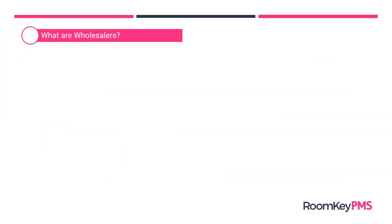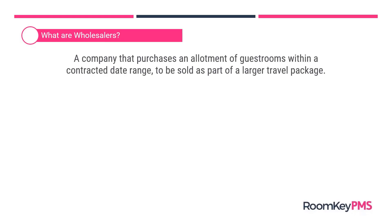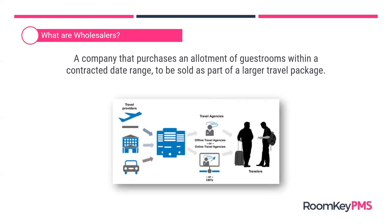Let's take a look at defining our topic for today — what are wholesalers? These are companies that purchase an allotment of guest rooms within a contracted date range, to be sold as part of a larger travel package. The wholesaler purchases from the hotel, then repackages those rooms, bundles them, and sells them to tour providers or online travel agents.